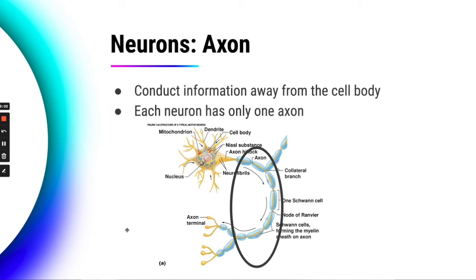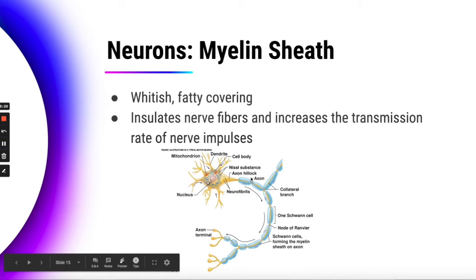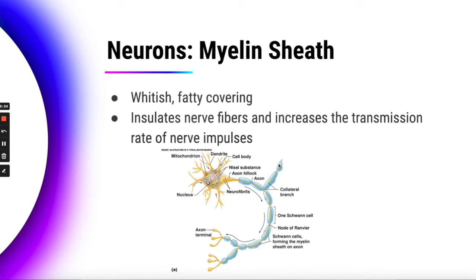The myelin sheath — it looks bluish on this diagram. Think of a phone charger: the wires inside would be like the axon, and the white plastic coating on the outside would be like the myelin sheath. It insulates your nerve fibers and lets information be transmitted smoothly without issues passing to the next neuron.